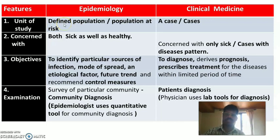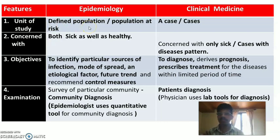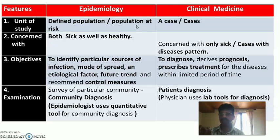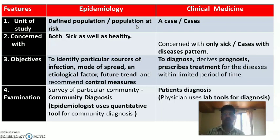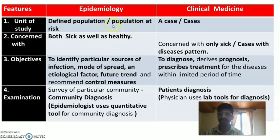The first feature of difference is the unit of study. In epidemiology, the unit of study is a defined population, or the population at risk — a group of people living in a particular geographical area, such as a community, ward, or family.